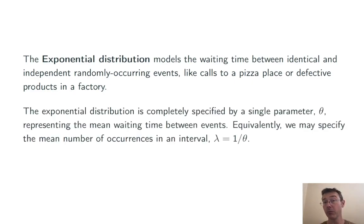The exponential distribution is completely specified by a single parameter, either theta, the mean waiting time between events, or lambda, the mean number of occurrences of the event per unit time.